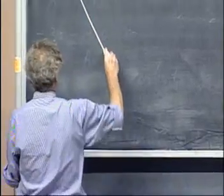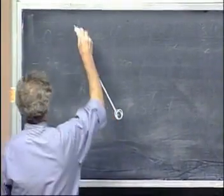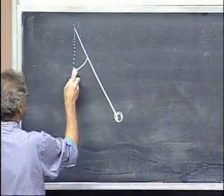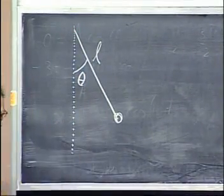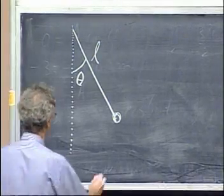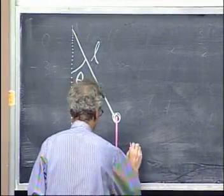Here is the pendulum. Here is the mass, and it's offset at an angle theta. The length of the pendulum is L, the length of the string. There is gravity here, mg.